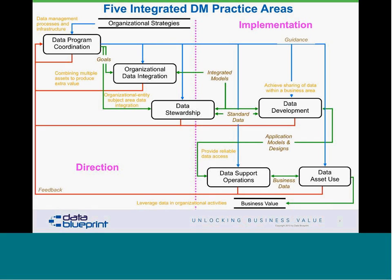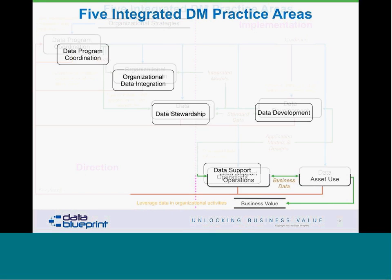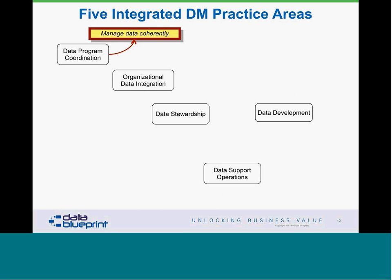We always talk about data management as being five integrated practice areas. It's a difficult chart — we don't expect anybody to get it right off, because there's a lot of material to absorb. But the real key is that these are five interlocking chain links, and if one of the chain links is broken, non-existent, or weak, the entire practice area can only be as strong as the weakest link in the chain. The first link is managing data coherently — making sure we're all singing off the same sheet of music. When we go into organization after organization, we find really dedicated people working in work groups, not at an enterprise level, and oftentimes these work groups are working at competing purposes.